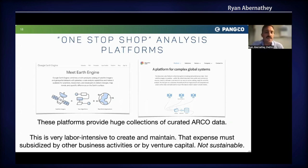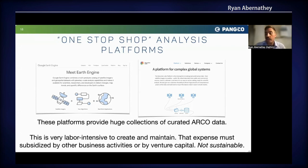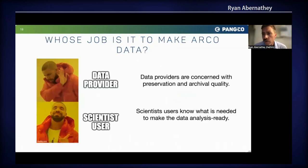Many of you are probably familiar with one-stop-shop analysis platforms in the cloud — Google Earth Engine being a very well-known example. These platforms have great analytic capabilities, and they also provide huge libraries of curated ARCO data. It's very labor-intensive to create and maintain such libraries, and as a result that expense has to be subsidized by other business activities or by venture capital investment. I sometimes wonder whether this is a sustainable path towards providing open science access to everyone in the world. I think it's interesting to question whose job it really is to be making ARCO data. Data providers like NASA are very interested in this, but I have the perhaps controversial opinion that data providers' main job is preservation and archival quality — it's really the scientist users who know what is needed to make data analysis ready.